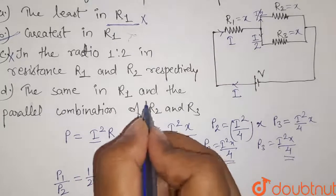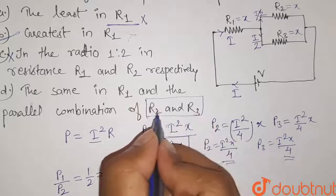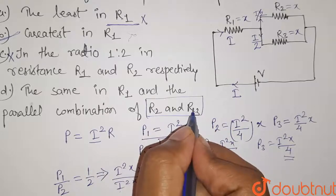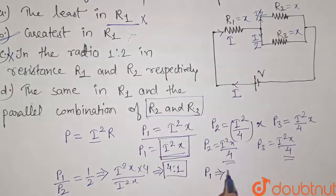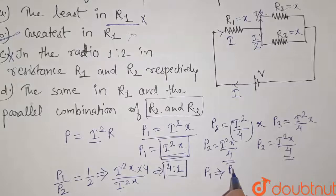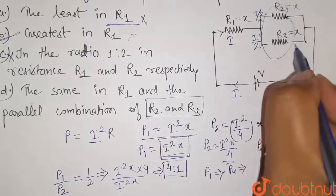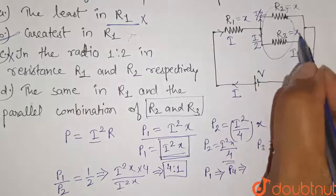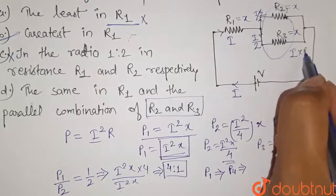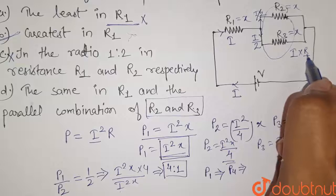So power dissipated by this parallel combination, let us name it to be P4, will be: because through this parallel combination the current flowing is I, and its equivalent resistance will be R by 2, that is X by 2. So this is the parallel equivalent resistance of these two resistors and this is the current.